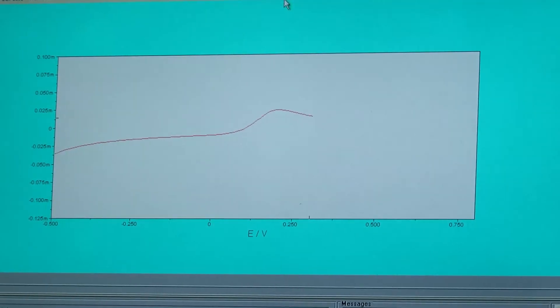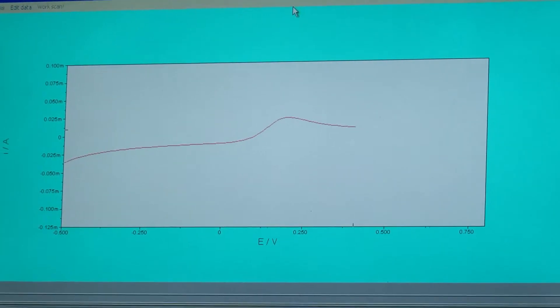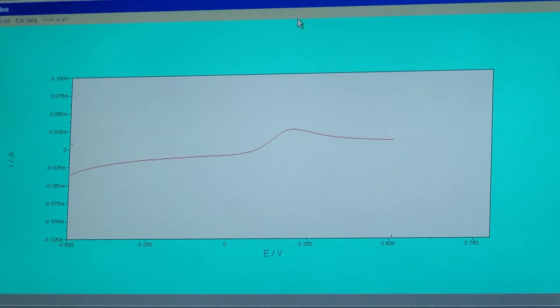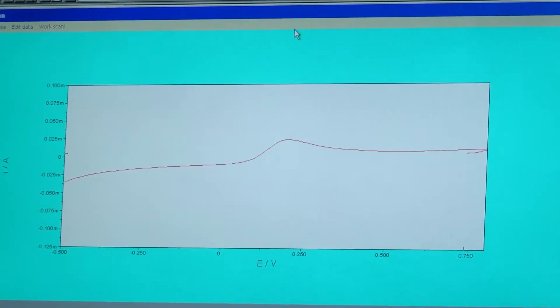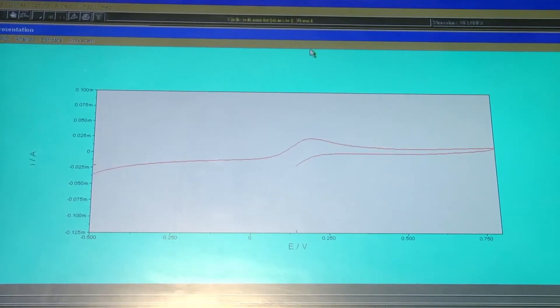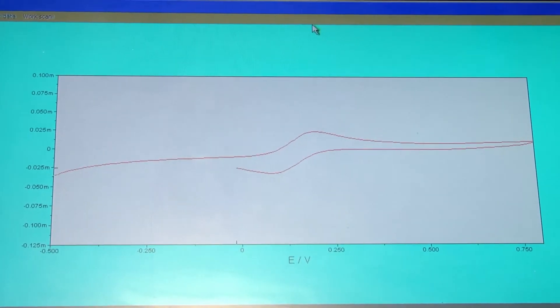It displays a beautiful peak for the oxidation reaction during the forward scan where Fe2+ is converted into Fe3+. Upon reversing the scan direction, one can see the reverse peak due to the reduction where Fe3+ is converted back to Fe2+.